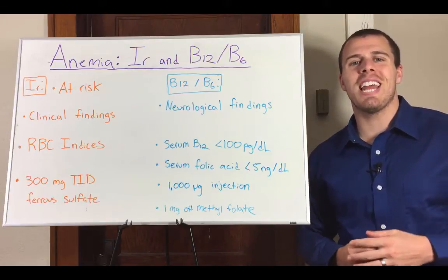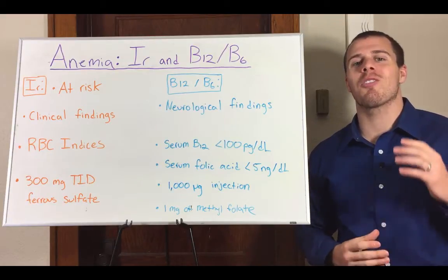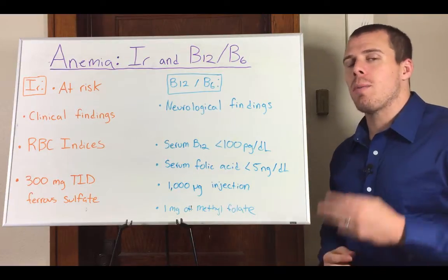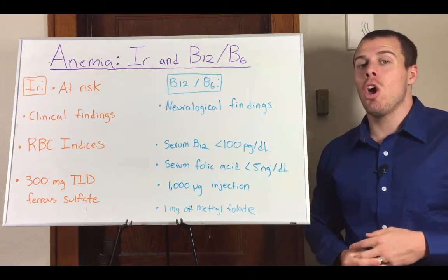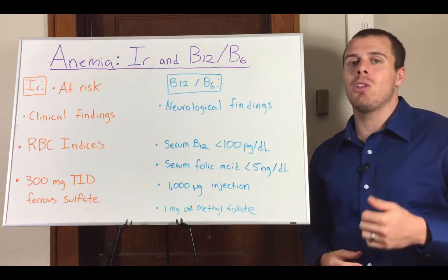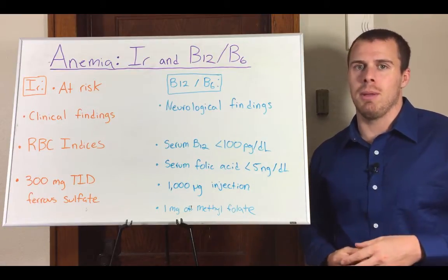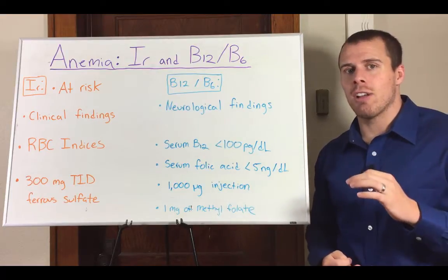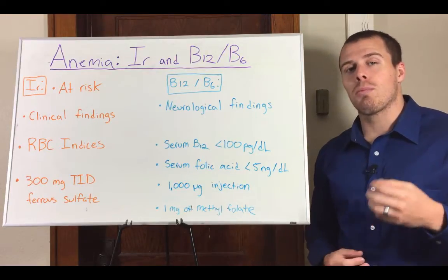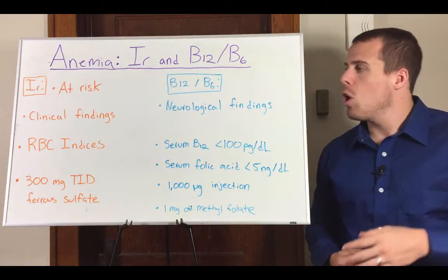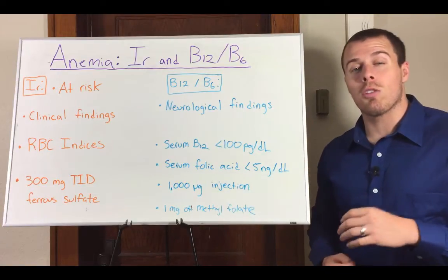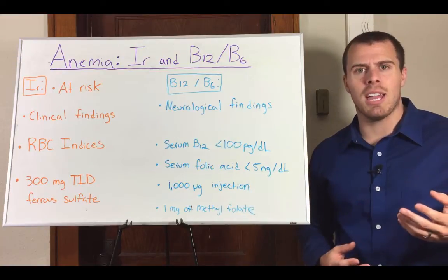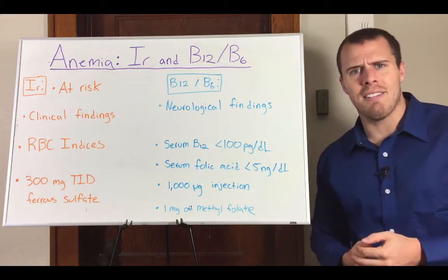Hey everybody, thanks for joining me today. Ross Marcogianni with another great conversation at Revol.com. Today we're going to be talking about three types of anemias: iron anemia, B12 anemia, and B6 anemia. We'll be talking about populations that are at risk, going over clinical presentations, red blood cell indices, and then how we treat these anemias. So let's dive in.